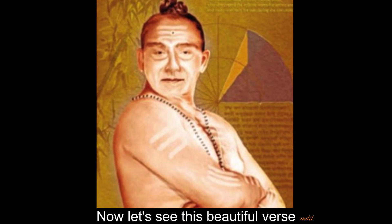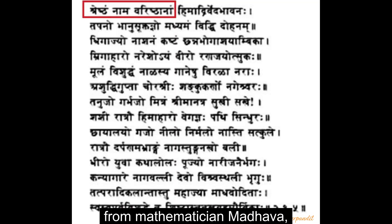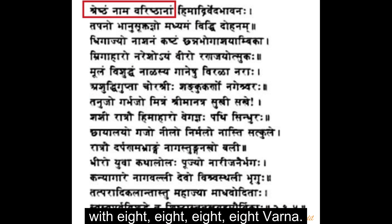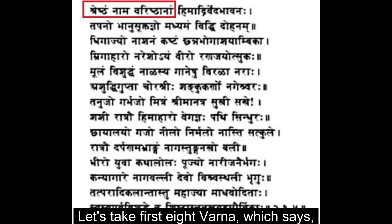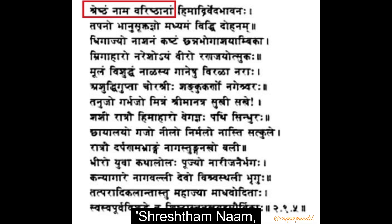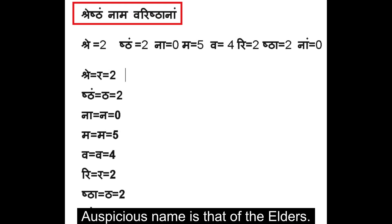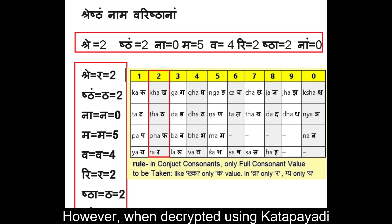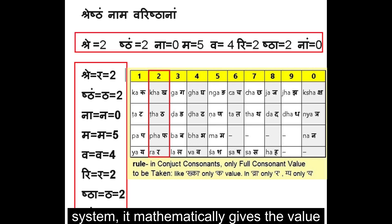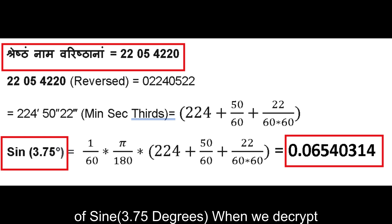Now let's see this beautiful verse from mathematician Madhava, written in Anustubh meter — a quatrain of 4 lines with 8-8-8-8 varna. The first 8 varna say 'Shrestam Nama Varishtanam,' meaning 'the most auspicious name is that of the elders.' However, when decrypted using the Kathapayadi system, it mathematically gives the value of sine 3.75 degrees.